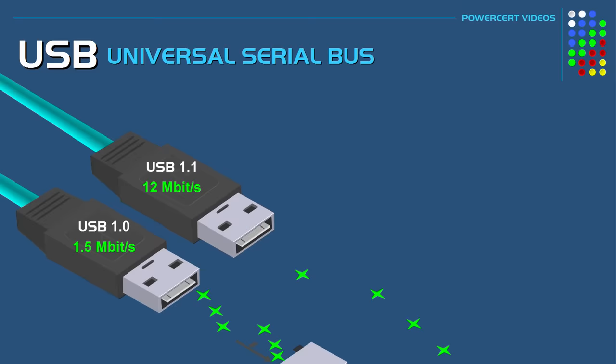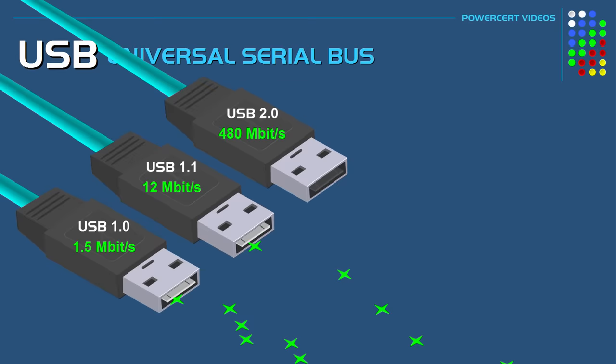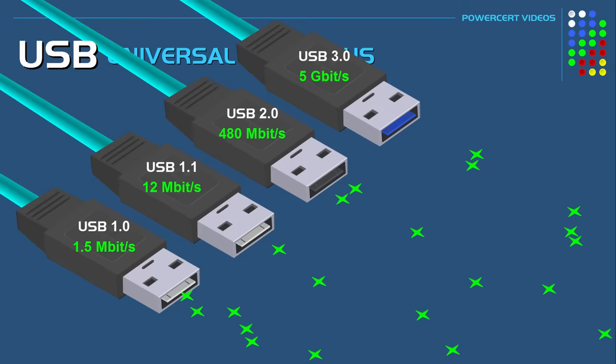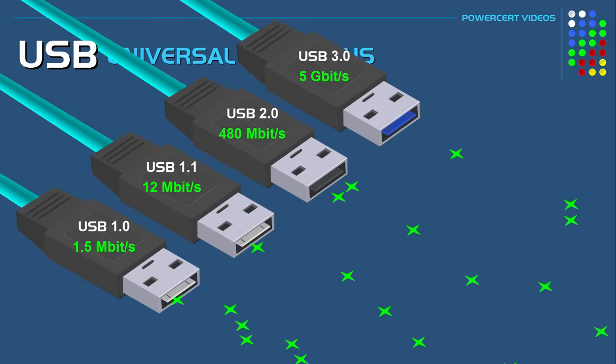Then in the year 2000, USB 2.0 — also known as High Speed USB — was released. This had a significant speed upgrade from USB 1.1, with speeds of 480 megabits per second. Then in 2008, USB 3.0 was released, known as Super Speed USB, boasting speeds of 5 gigabits per second. The high speed increase was meant for transferring large amounts of data, such as backing up to external hard drives.